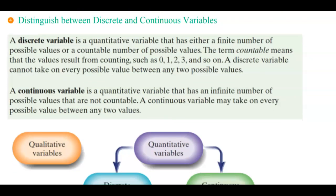Objective four: distinguish between discrete and continuous variables. A discrete variable is a quantitative variable that has either a finite or countable number of possible values. The term 'countable' means that values result from counting — zero, one, two, three, and so on. A discrete variable cannot take on every possible value between any two points.